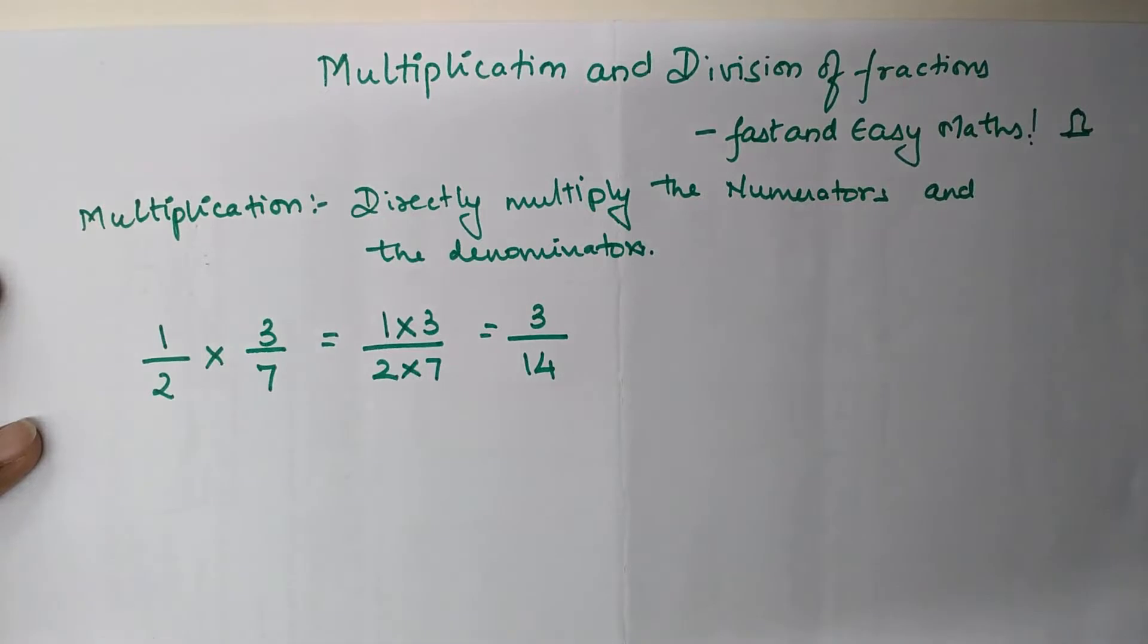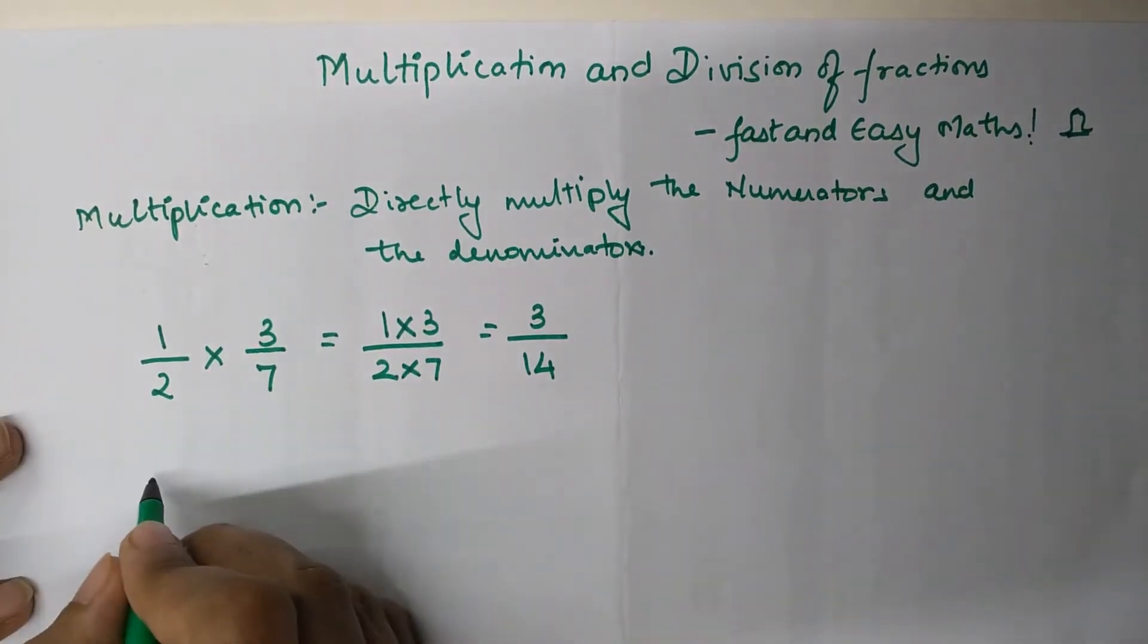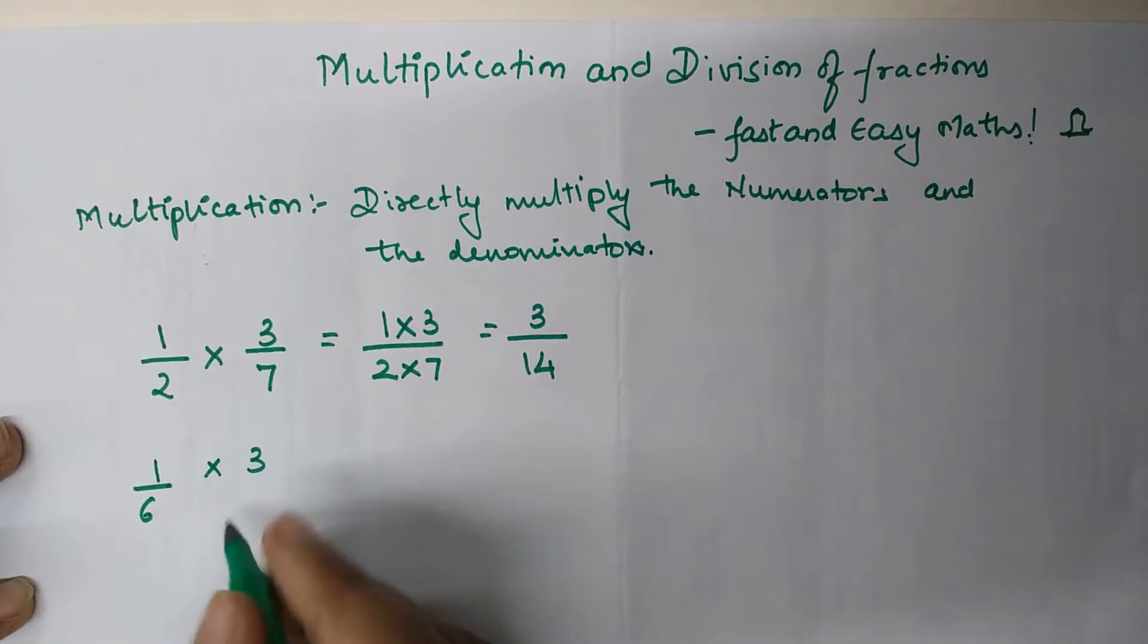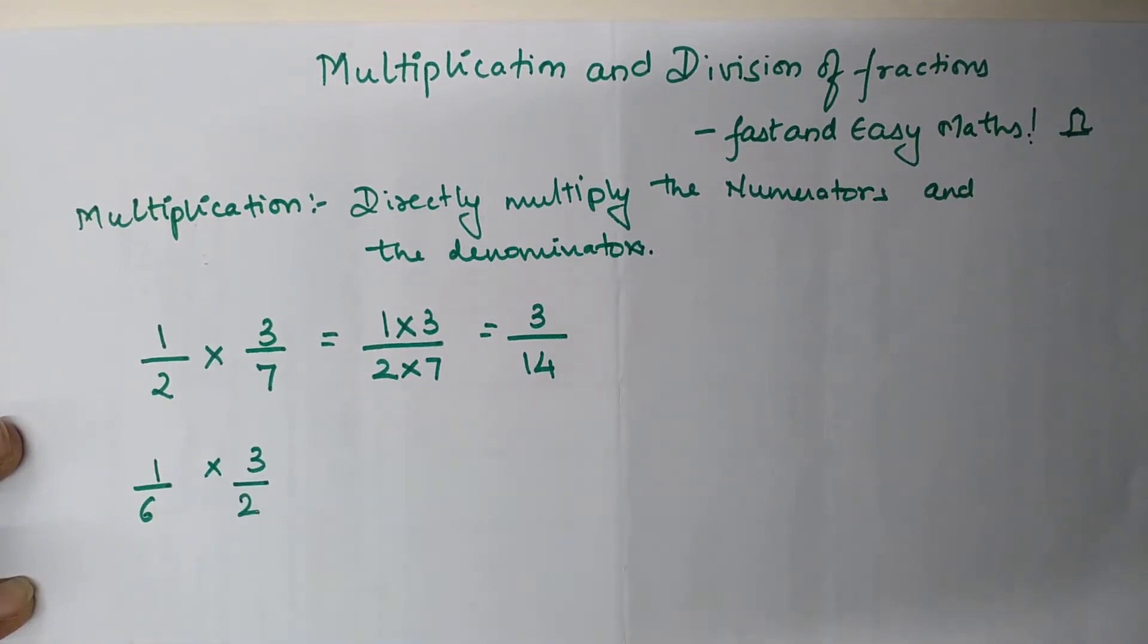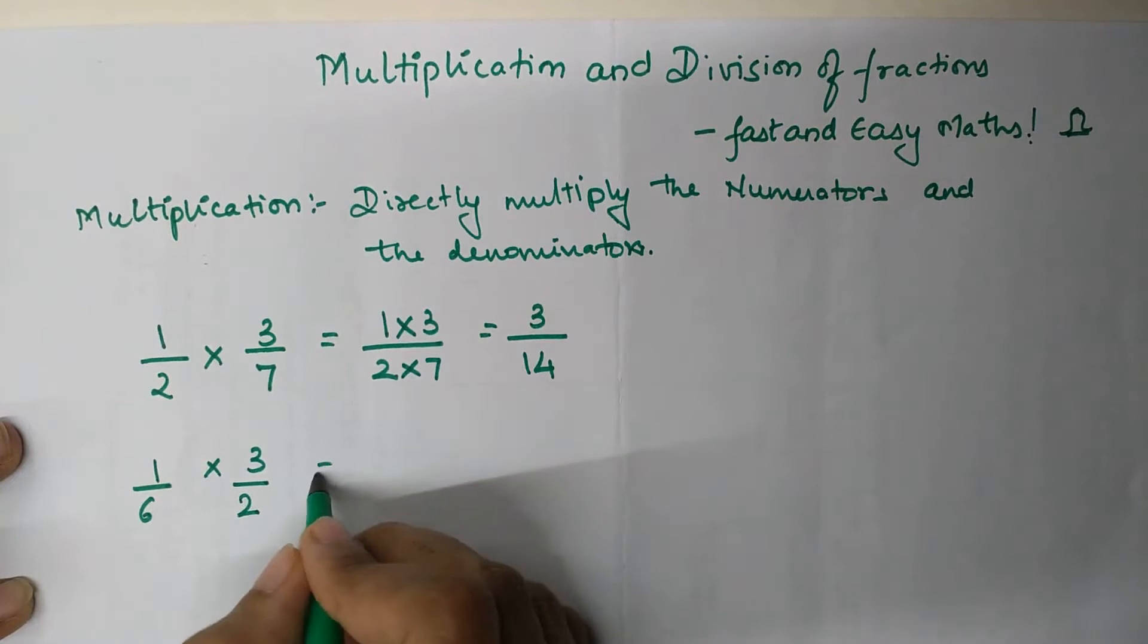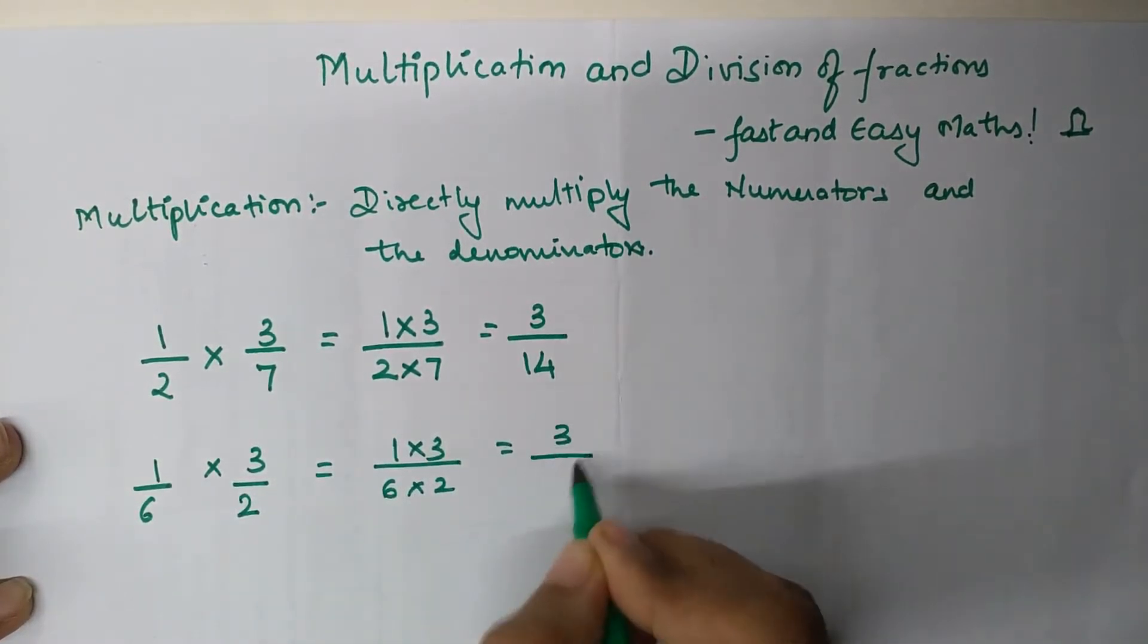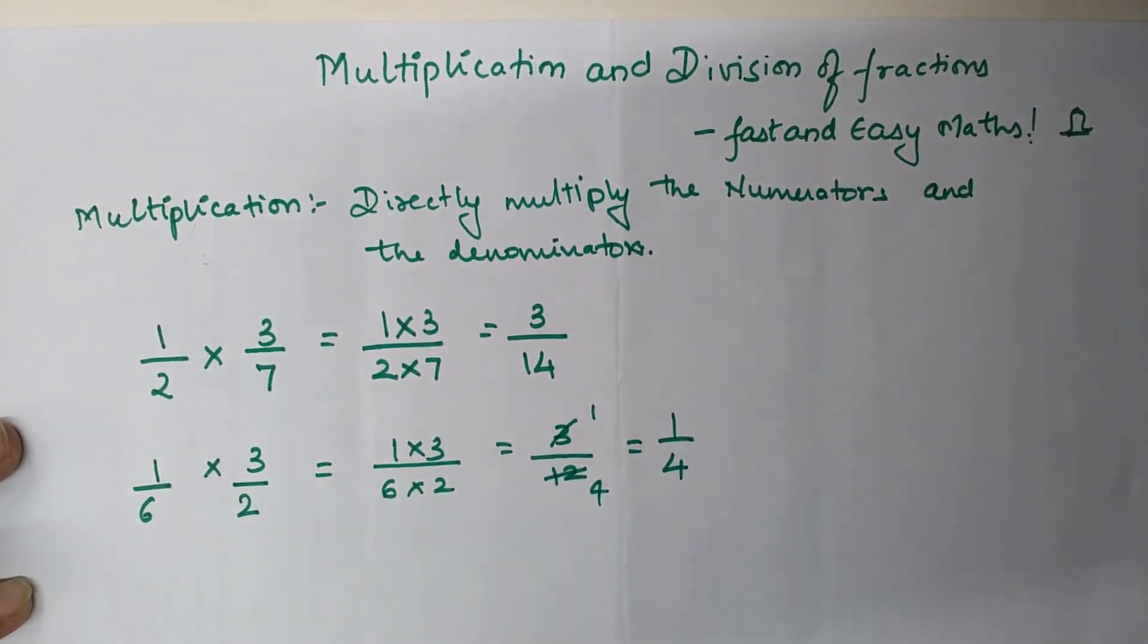Let's say if you are multiplying 1/6 times 3/2. We can directly multiply, so my numerator is 1 times 3 and denominator is 6 times 2, which becomes 3 upon 12. This gets further reduced because 3 goes into 12 four times, so my final answer is 1 upon 4.